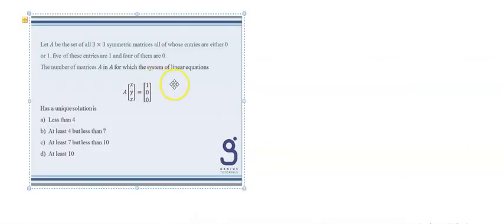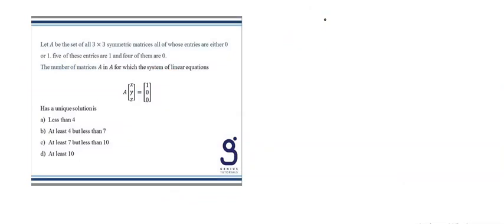Now in the next question, A is again the set of all 3×3 symmetric matrices with entries 0 or 1. This time we have to find the number of matrices A for which the system of linear equations has a unique solution. A unique solution is possible only when A is non-singular, meaning the determinant of A should not be equal to zero.